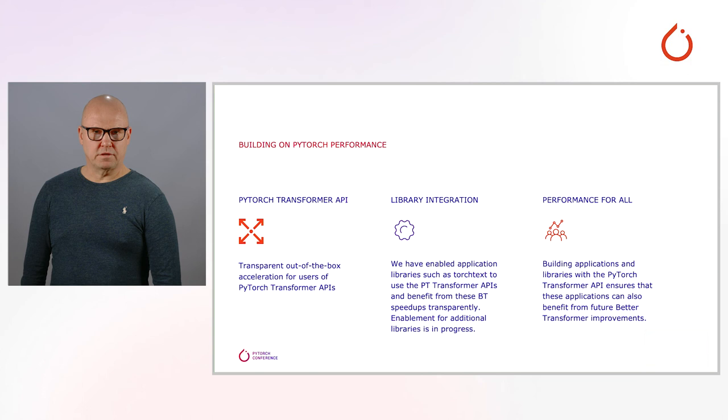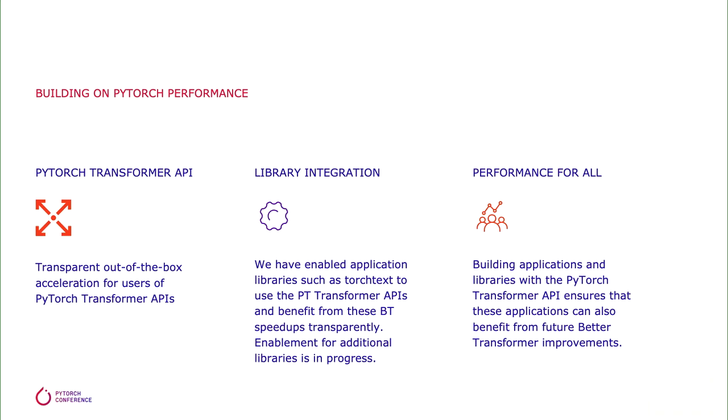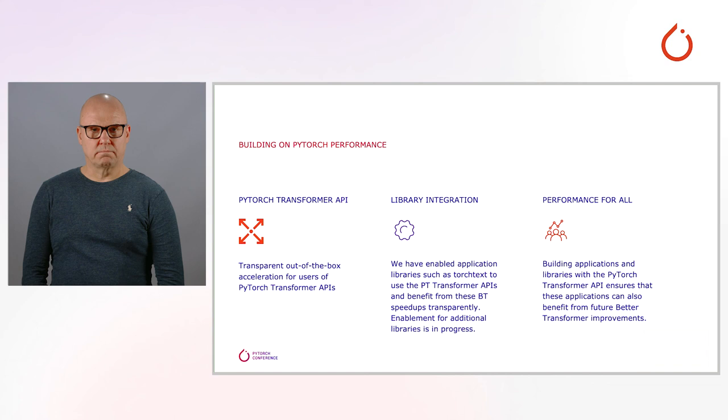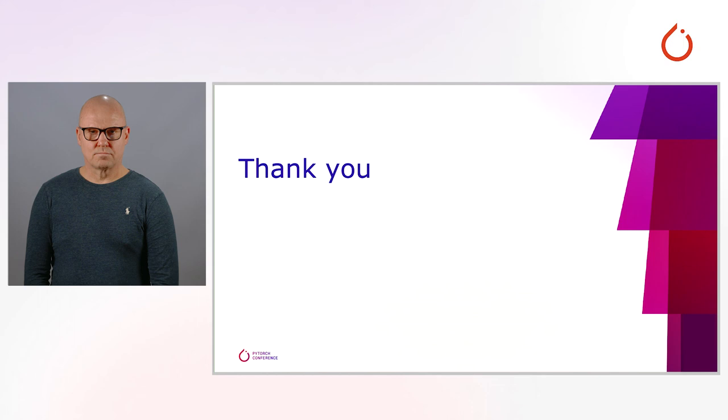We invite you to use the PyTorch Transformer API to take advantage of the transparent, out-of-the-box acceleration experience for your models, whether you are a model developer or a library developer. We are partnering with some of the most popular libraries to infuse them with the benefits of Better Transformer Fast Path. For example, TorchText now directly uses the PyTorch Transformer API, giving users of TorchText models the advantages of Better Transformer acceleration. Building models and libraries using the PyTorch Transformer API is the best way to ensure that your applications always have the best performance and can take advantage of any additional optimizations we will be adding.